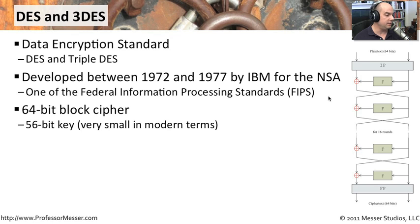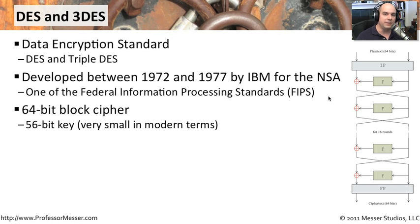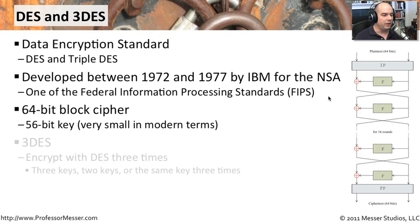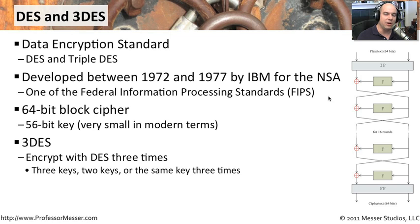DES was a 64-bit block cipher that used a 56-bit key, and that's a very important part of this. DES has a very small key, and as our processing power has gotten stronger and faster in modern times, we have found it very simple to brute force a DES key. Because of that, we've decided not to use DES any longer. It's really hard to find a technology still using DES — you could crack a DES key with a mobile phone these days. It's painfully easy.